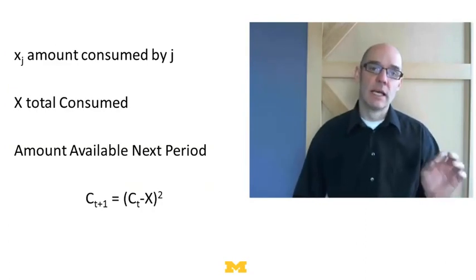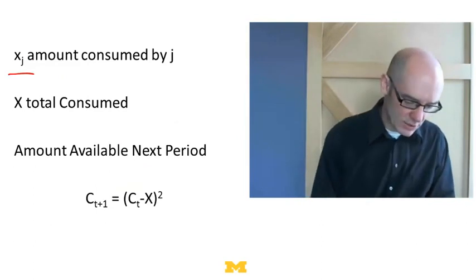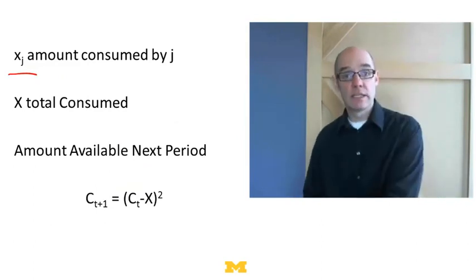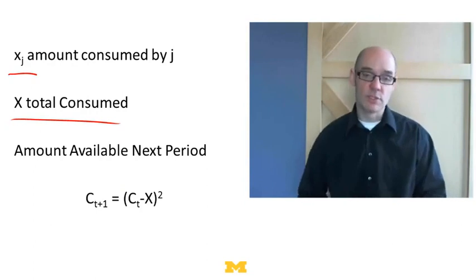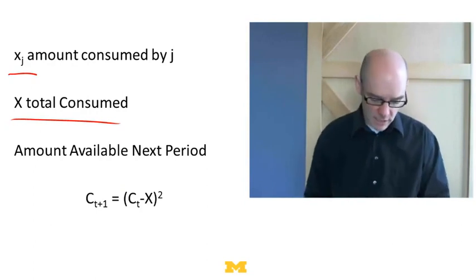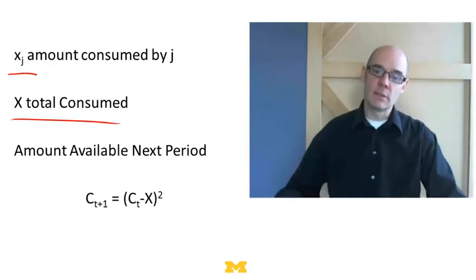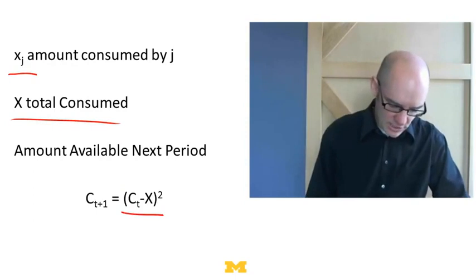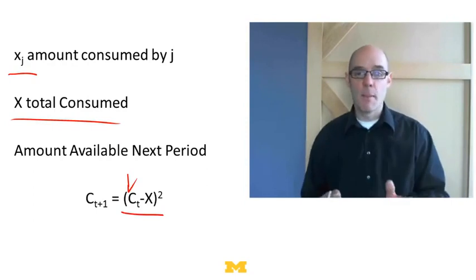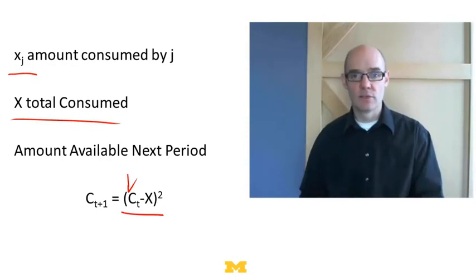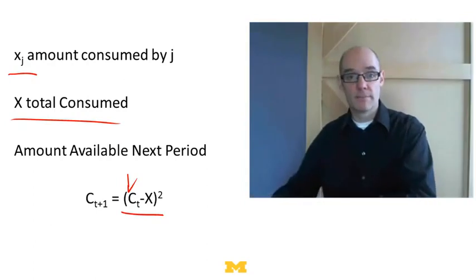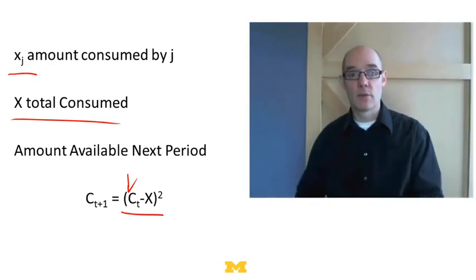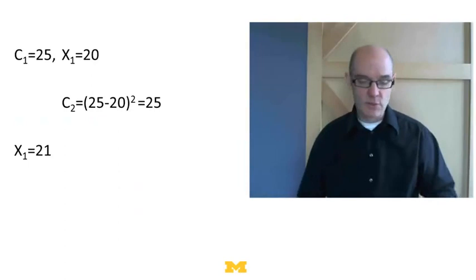Let's see how this would work. Let's suppose now that I've got to decide how much cod to eat. We'll let xj equal the amount of cod that I eat or how much I fish. And we'll let x be the total consumed, the sum of what everybody does. What we'll assume is that the amount of cod available next period is the cod that was available this period minus what was eaten, squared. So cod can mate and reproduce and make more cod. And the more we eat, the fewer there are to reproduce.